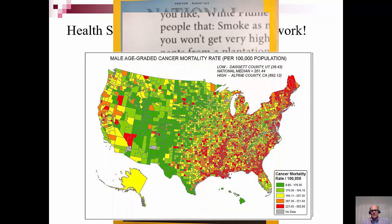These are the rates for male age-graded cancer mortality rates, which highlight different patterns. Red indicates the highest rates, green the lowest rates. They're still relatively high in the Northeast, but you can see other patterns along the Mississippi River and along the Coal Belt.